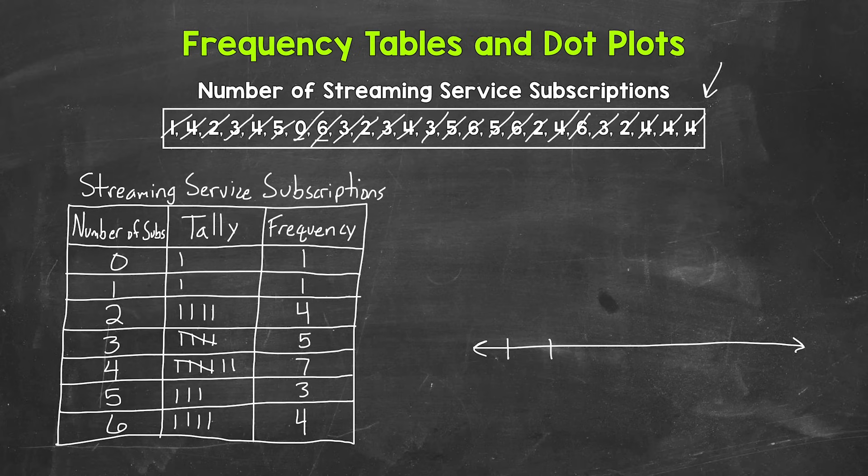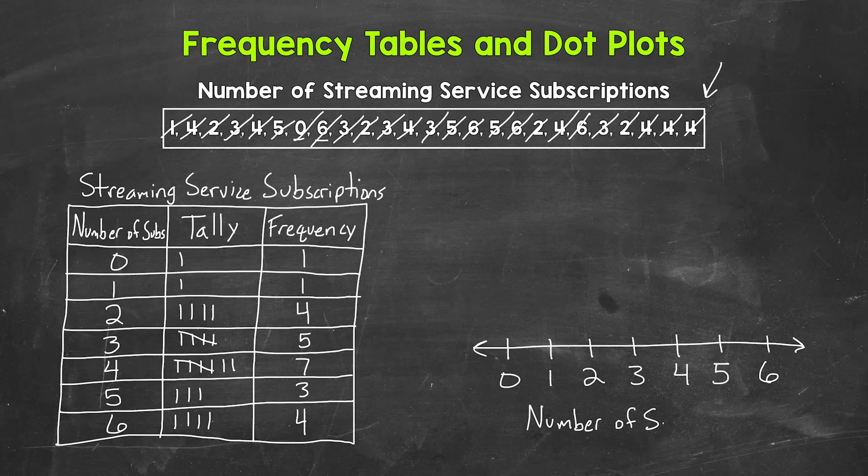So let's make our number line here and go from zero to six. So zero, one, two, three, four, five, six. And let's label these numbers. So let's do number of subscriptions. By labeling those numbers, anyone that looks at this dot plot will know exactly what they represent.